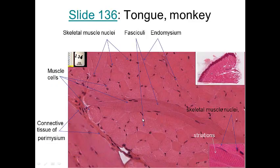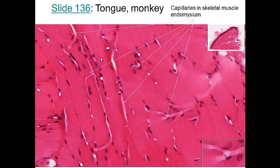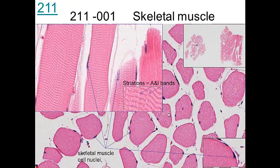This is a fascicle of muscle cells with endomysium in between them. These are nuclei of muscle cells, with the connective tissue of the perimysium visible. The nuclei are on the periphery, and the muscle is striated with light and dark bands — the A band being the dark band. Looking in the endomysium between muscle cells, we can see endothelial cells of capillaries branching through there, feeding these cells.